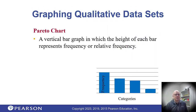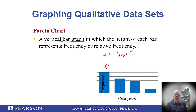Next, the Pareto chart. This is a vertical bar chart, and what sets it apart from other bar charts is that regardless of what the categories are, we put the one with the greatest frequency first. Each other category comes in order of its frequency from highest to lowest — that's a Pareto chart.